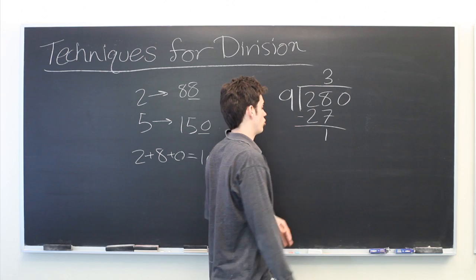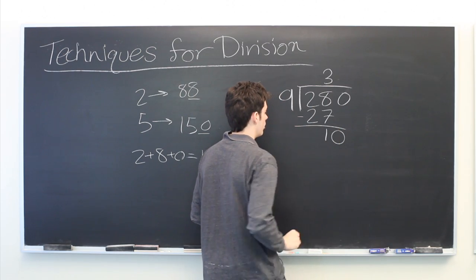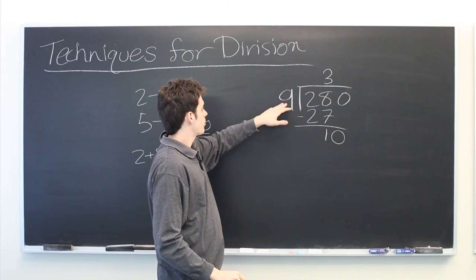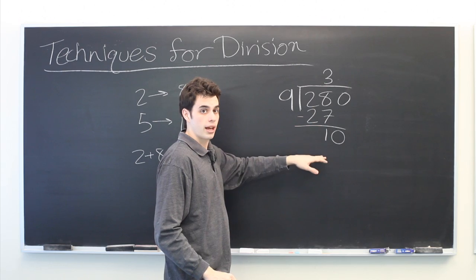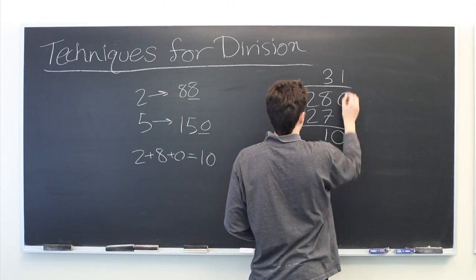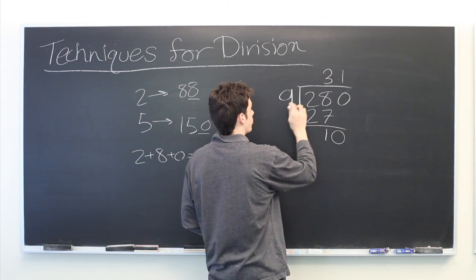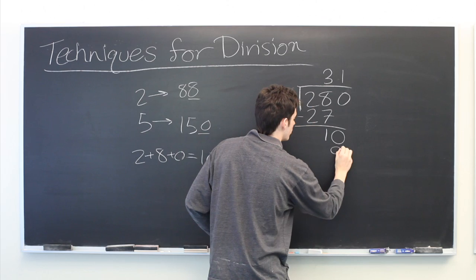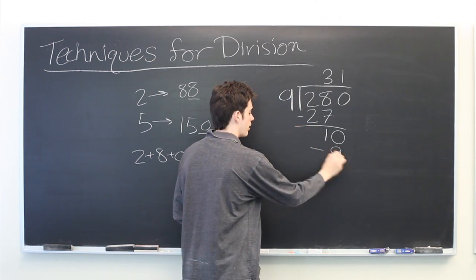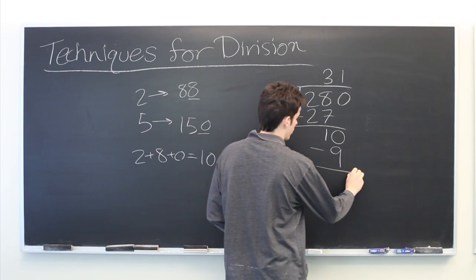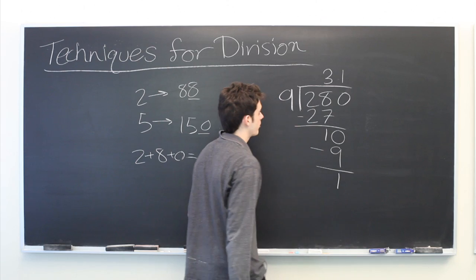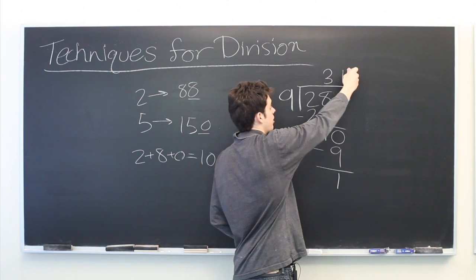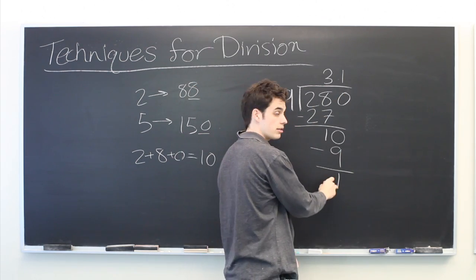Let's bring down the other digit. The question is, how many times does 9 go into 10? Just once. Now we multiply 9 times 1. Get 9 again. Subtract. We get 1. And since we've reached the end of our number, this is our remainder.